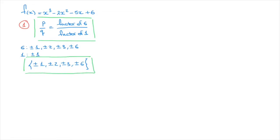We move on to step 2. In step 2, we use trial and error for each of these possible roots, checking whether or not when we plug them into f of x it's indeed equal to 0. If it is, then we've found a root, or a zero, of this polynomial.